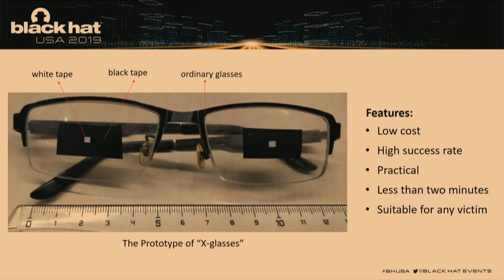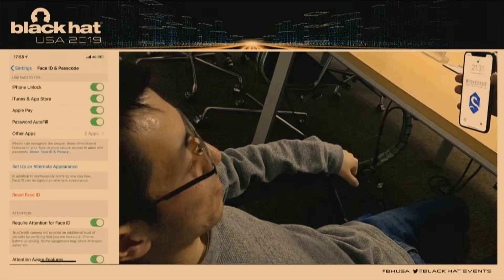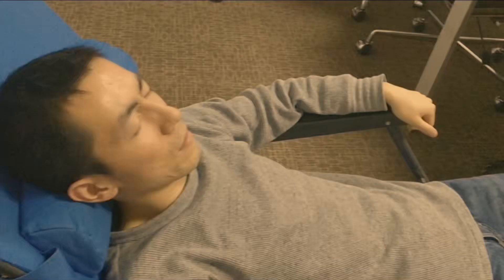Combining all these clues, we developed a simple device to bypass all attention detection. It's really simple — just ordinary glasses with two kinds of tape: one black and one white. It's ultra-low-cost, with a high success rate. It's really easy to make and can be done in just two minutes.